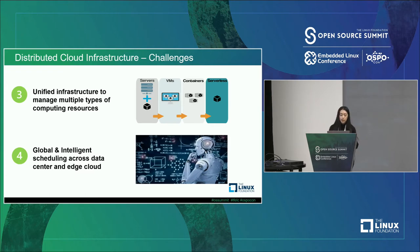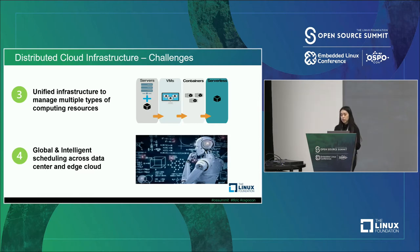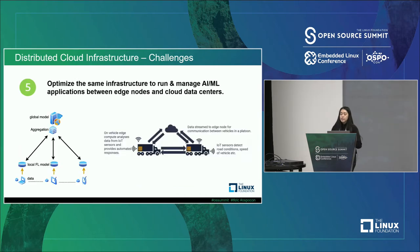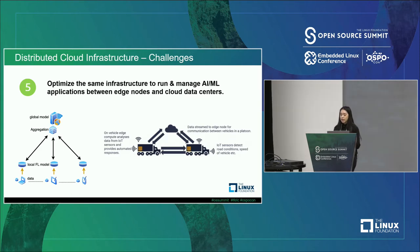With distributed cloud, computing nodes are everywhere — in large regional data centers or small remote locations. Determining where to run customer applications to achieve high throughput, high performance, and low latency while optimizing resource utilization is important. Distributed cloud infrastructure needs a global view of all resources and must be smart about allocating resources to run multi-tenant applications. As AI workloads become more dominant, we also need to optimize infrastructure to manage and run AI and machine learning applications between edge nodes and cloud data centers, with smart GPU resource allocation.